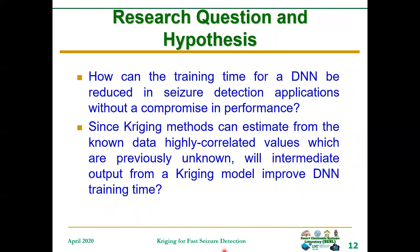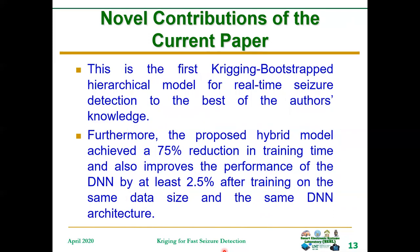Research question and hypothesis: DNN has been used for seizure detection, but one drawback of DNN is that it has a high training time because it learns the representation within the data set before making the final prediction. Our research question is: how can the training time for a DNN be reduced in seizure detection applications without compromise in performance? And, since Kriging methods can estimate from known data highly correlated values which are previously unknown, will intermediate output from a Kriging model improve DNN training time?